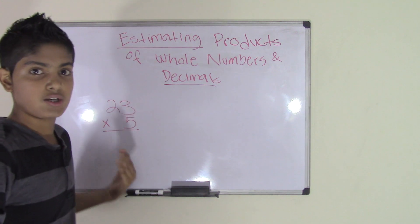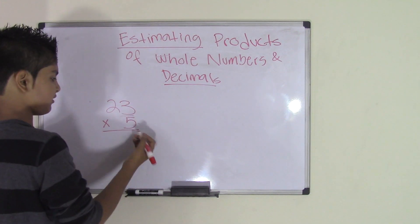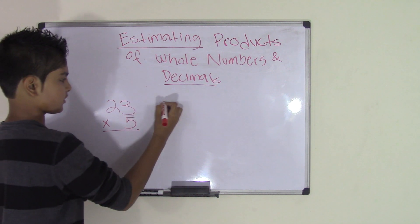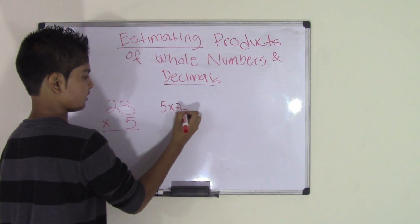And now we have a new problem, which is 23 times 5. How do we do this? Well, it's simple. 5 times 3, so we know that 5 times 3 is 15.